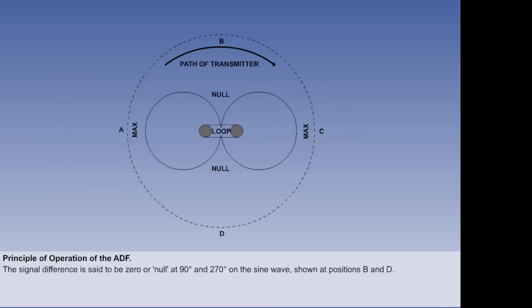There are two positions at which there is no difference between the strength of signal received by the two vertical elements of the antenna, at 90 and 270 degrees on the sine wave. The signal difference is said to be zero or null, shown at positions B and D.